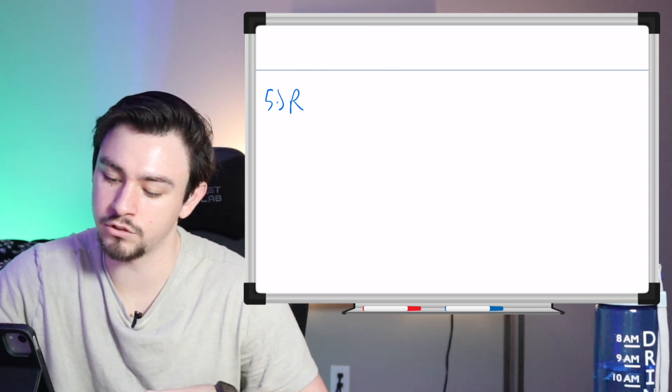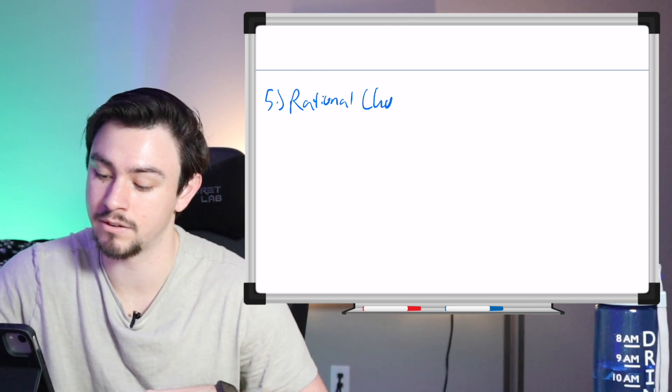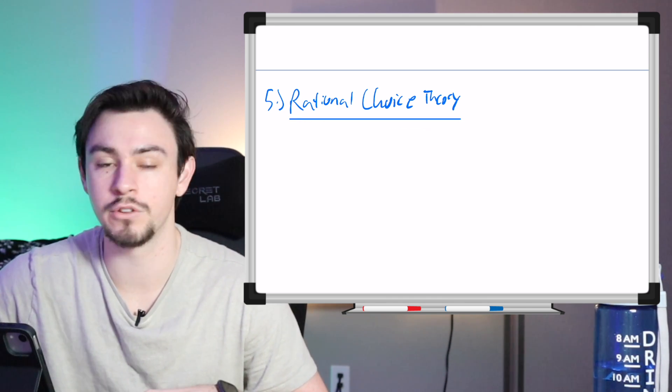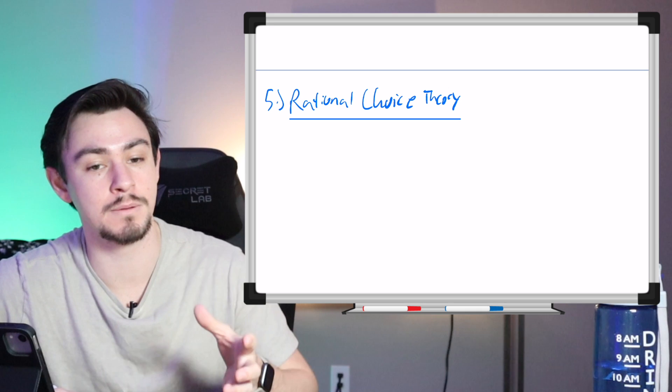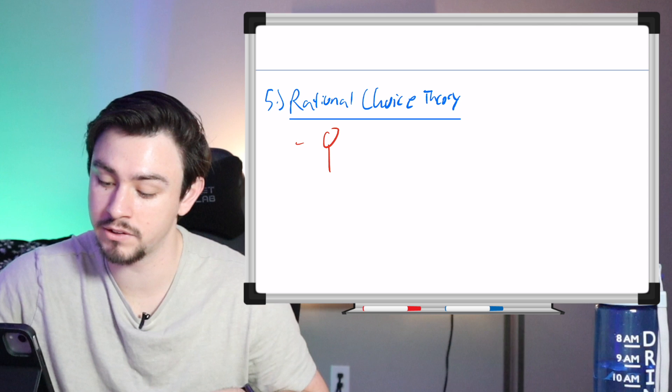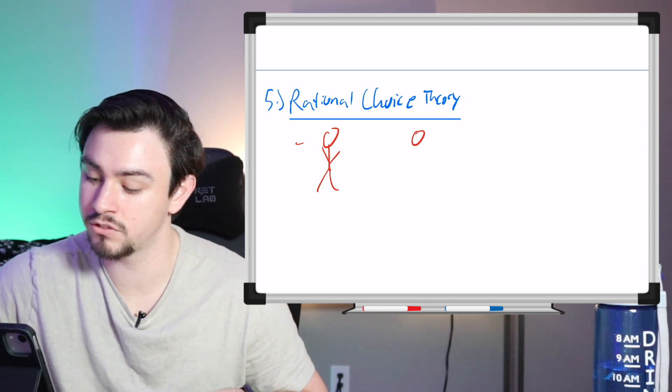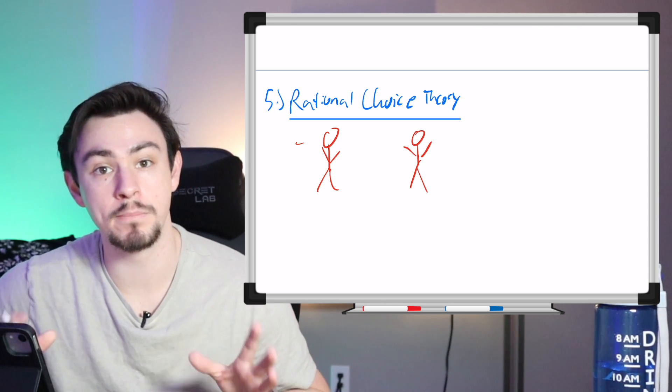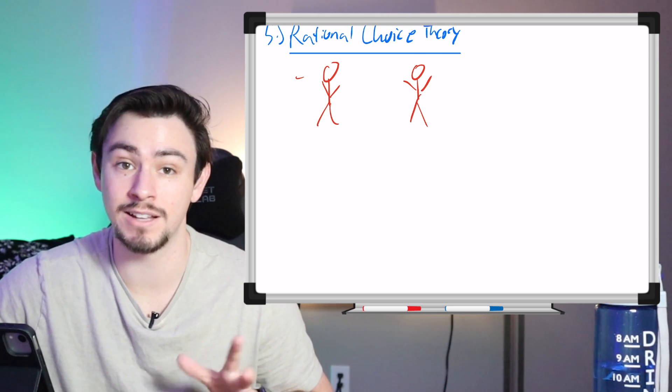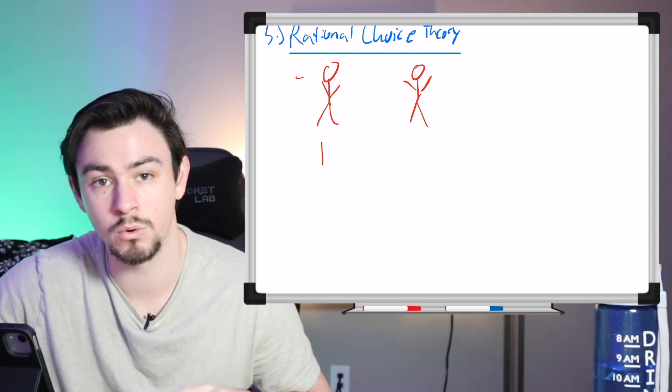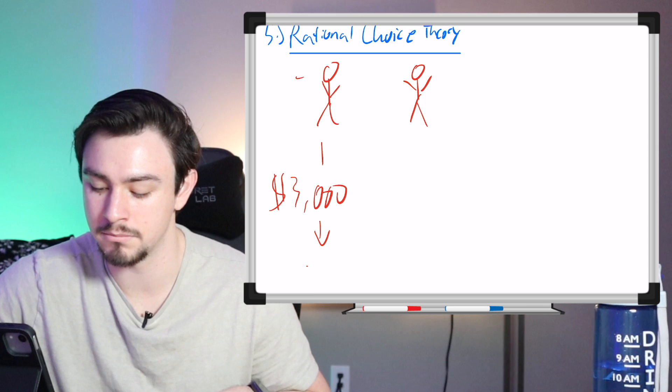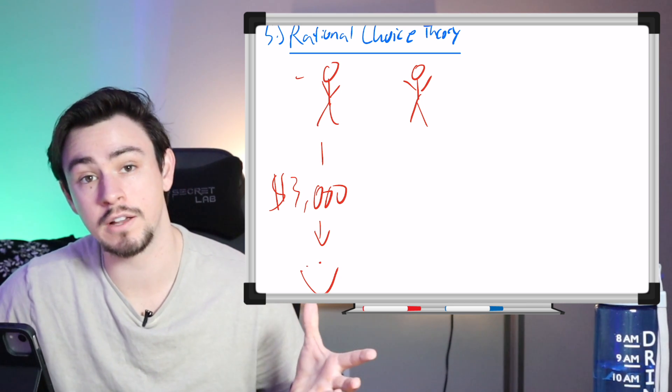The fifth is called the rational choice theory. And this is pretty much exactly what it sounds like. It states that every decision that is made is rational to the person that's making the decision. And that's why society makes decisions, because it's rational to the person making that decision. Now to drive that home, let's say we have two people. They're both students studying for the MCAT and they both want to go to medical school. Now, one person is deciding, hey, my family has a lot of money. I'm just going to go ahead and get one of those MCAT courses. They cost like $3,000. And yeah, that's a lot of money. But then I will be in medical school and I will be happy. Well, that's a rational choice to them.